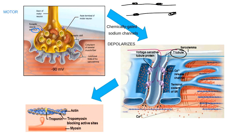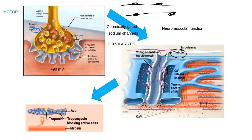At one location called the neuromuscular junction, we receive the message that tells that part of the membrane it's time to contract. But to get the entire long cell to contract, we need an action potential — a moving charge — to travel everywhere. The ability of that action potential to move all the way across the membrane is because of these structures called T-tubules.